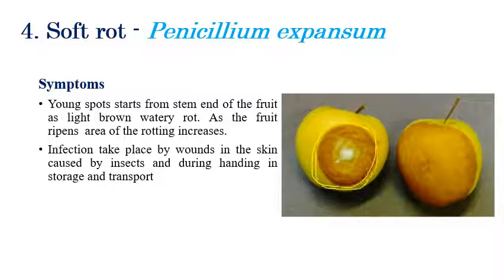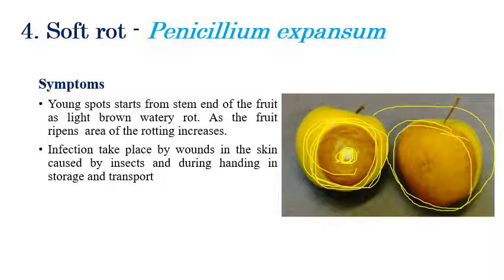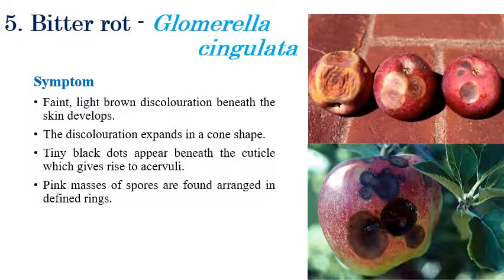The fourth disease is soft rot, caused by Penicillium expansum. Softening and rotting of infected fruits can be clearly seen. This mainly occurs during transportation, handling, or storage when small wounds form due to insects or mechanical damage. These wounds allow the pathogen to develop, and softening spreads to the entire fruit, resulting in light, watery soft lesions and complete rotting.